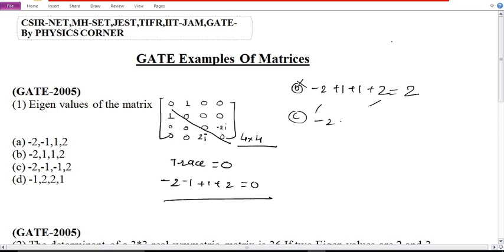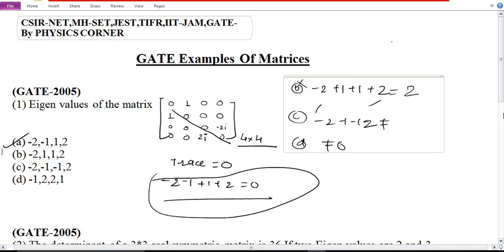C check. Minus 2, minus 1, minus 1, then 2. No, this is not equal to 0. The option D is not equal to 0. Only option A is equal to 0. That's why option A is correct. This is a very simple question.